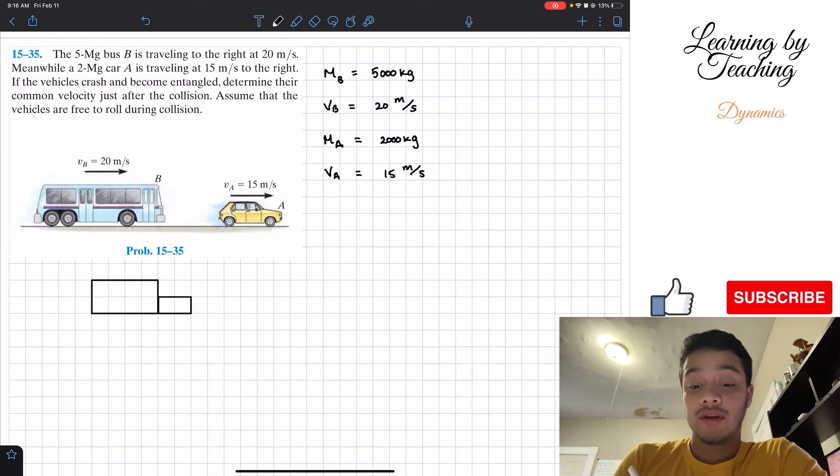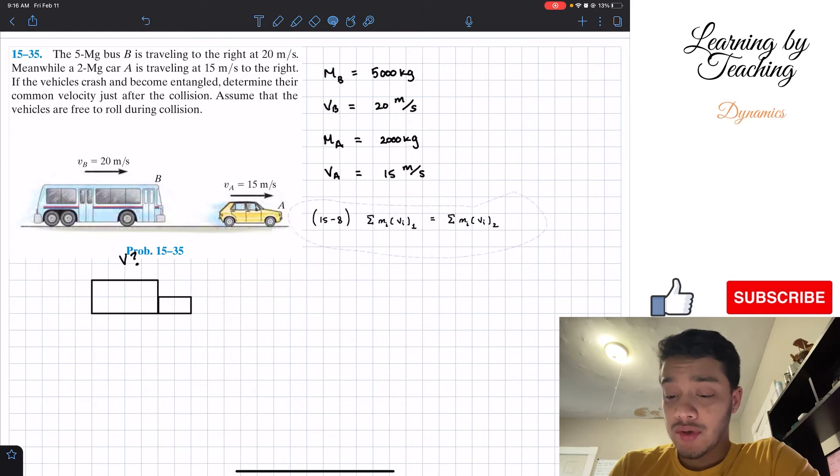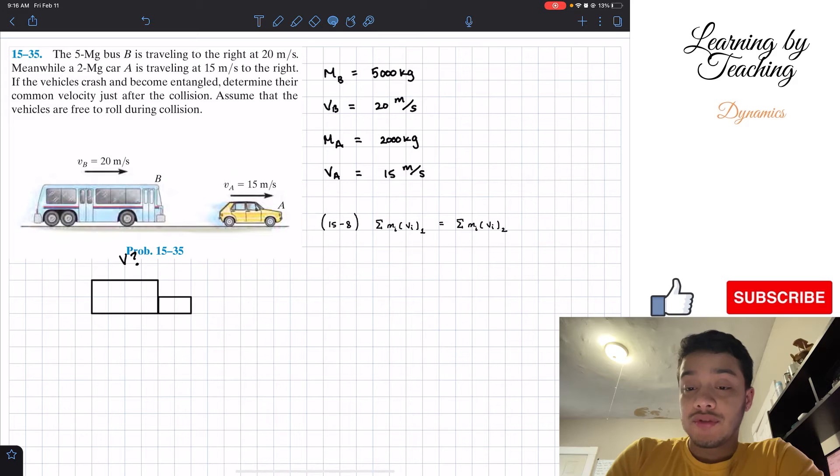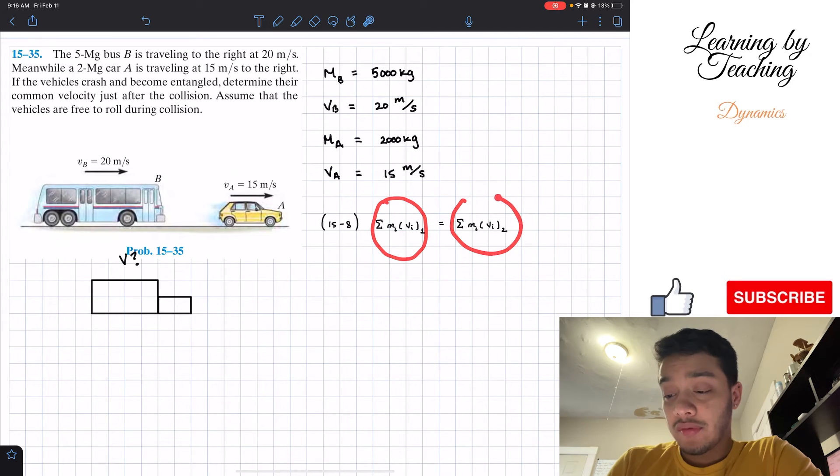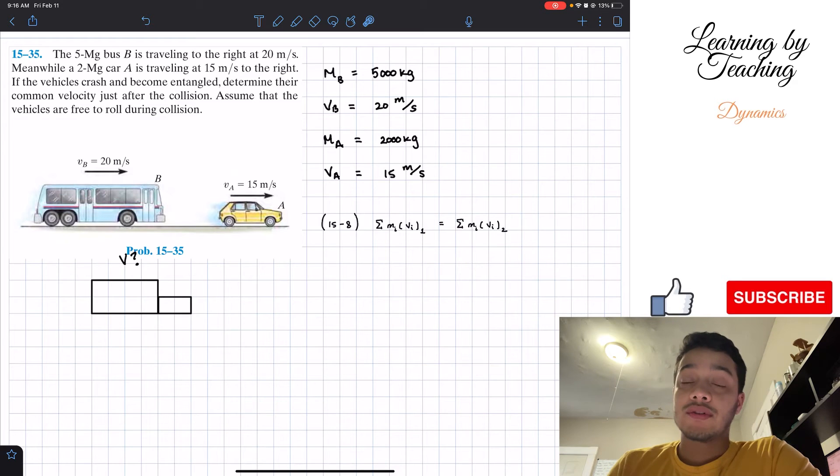This point is where we're interested to know what is the velocity. So what is this velocity when these two cars are stuck together? In order to do that, we're going to utilize the conservation of linear momentum equation of chapter 15, which says the sum of all the masses times the velocity at the initial point has to be equal to the sum of the masses times the velocity at our second point.